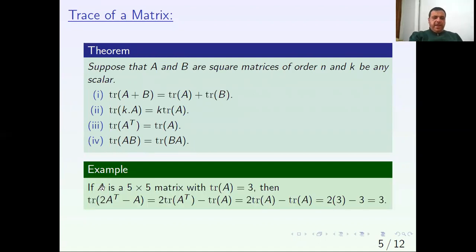If A is a 5 by 5 matrix with trace A equals 3, then trace of 2A transpose minus A. We know from properties one and two that we can distribute. So we can say 2 times trace A transpose minus trace of A.